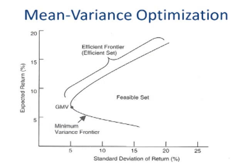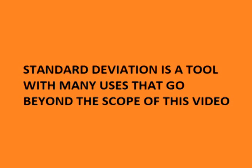Standard deviation is also used to measure risk and return, such as mean variance optimization, which is used in modern portfolio theory to determine asset allocation based on risk and return. Standard deviation also has many other uses that go beyond the scope of this video. It is a useful tool in many aspects that are well worth studying.